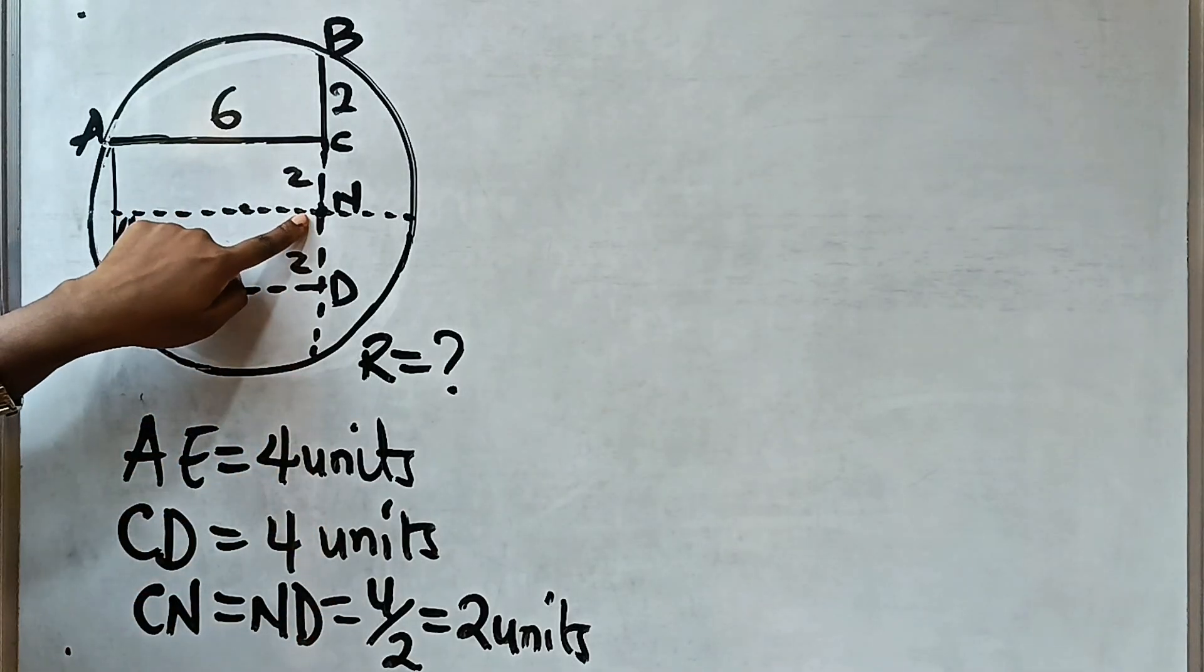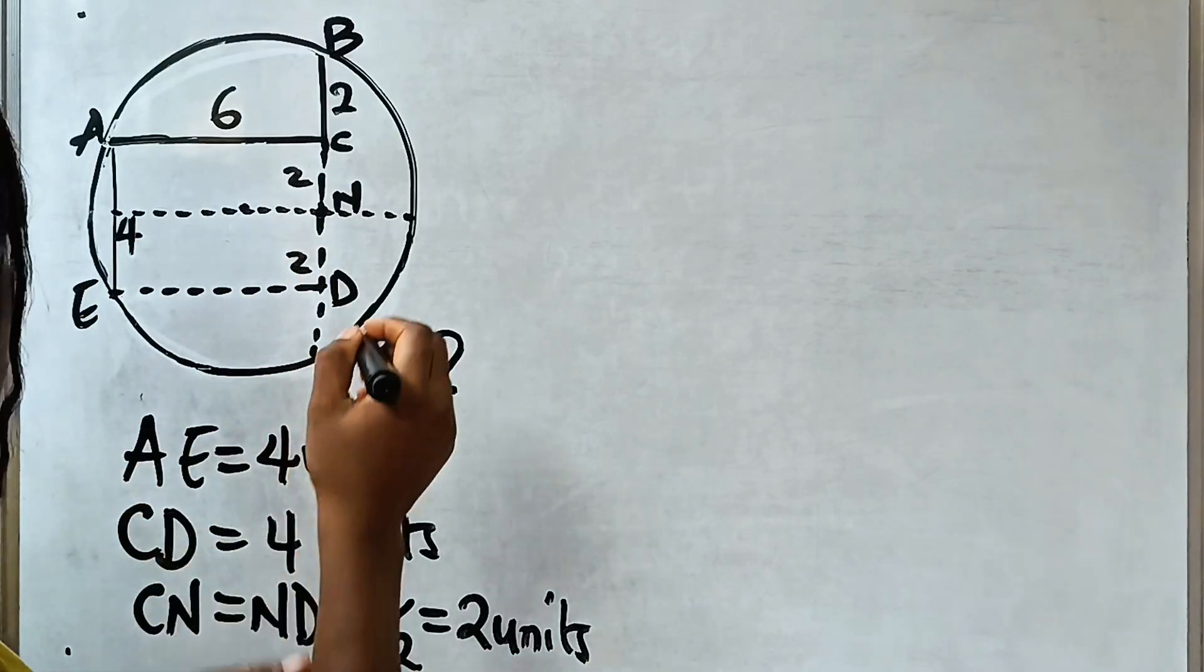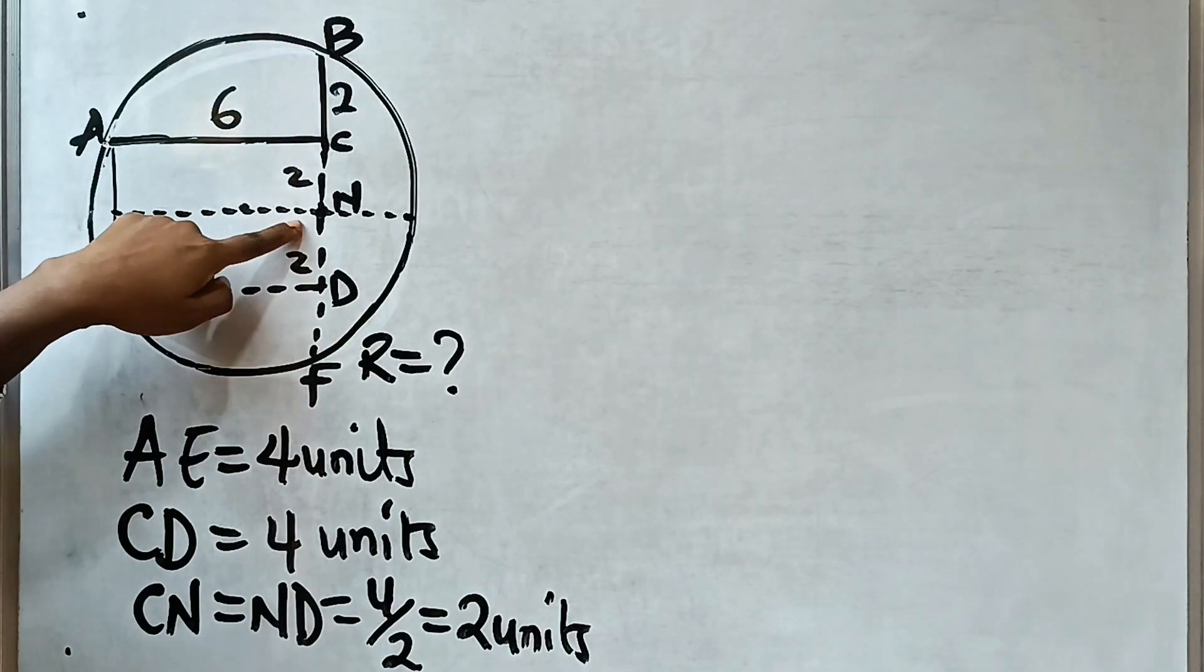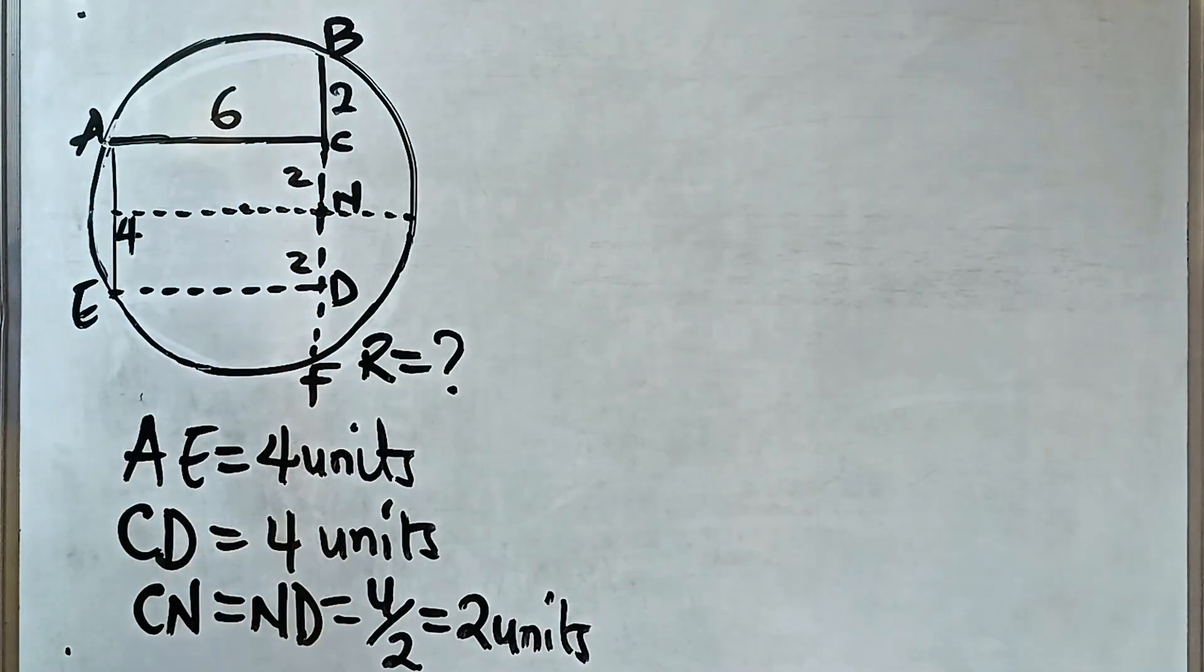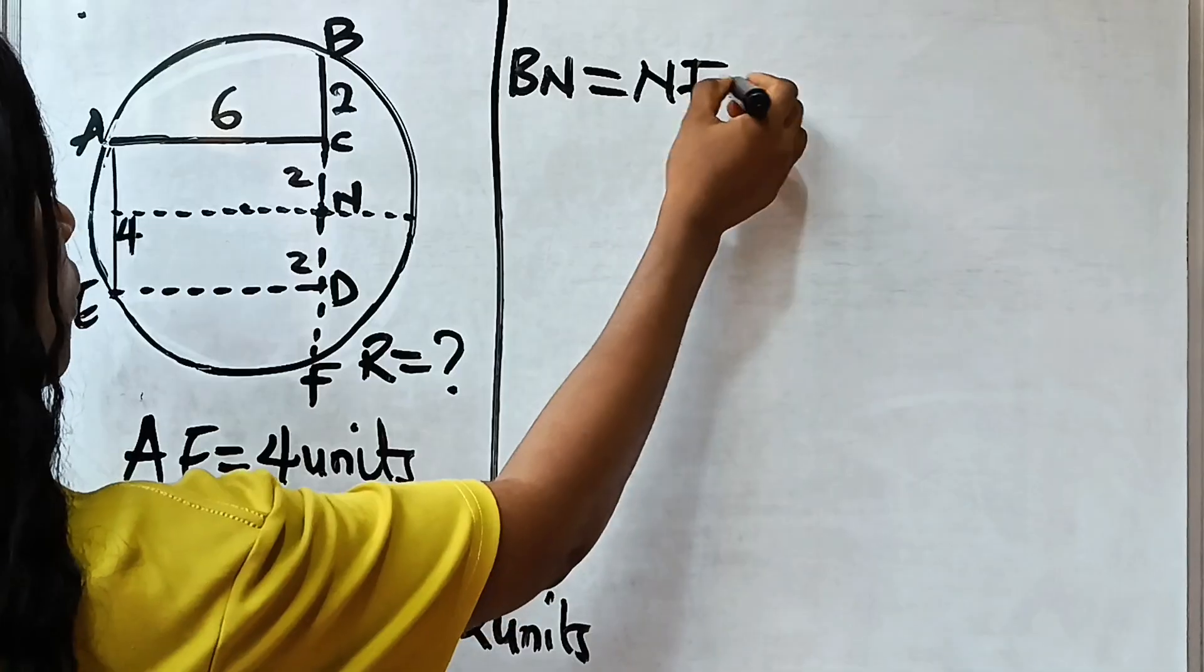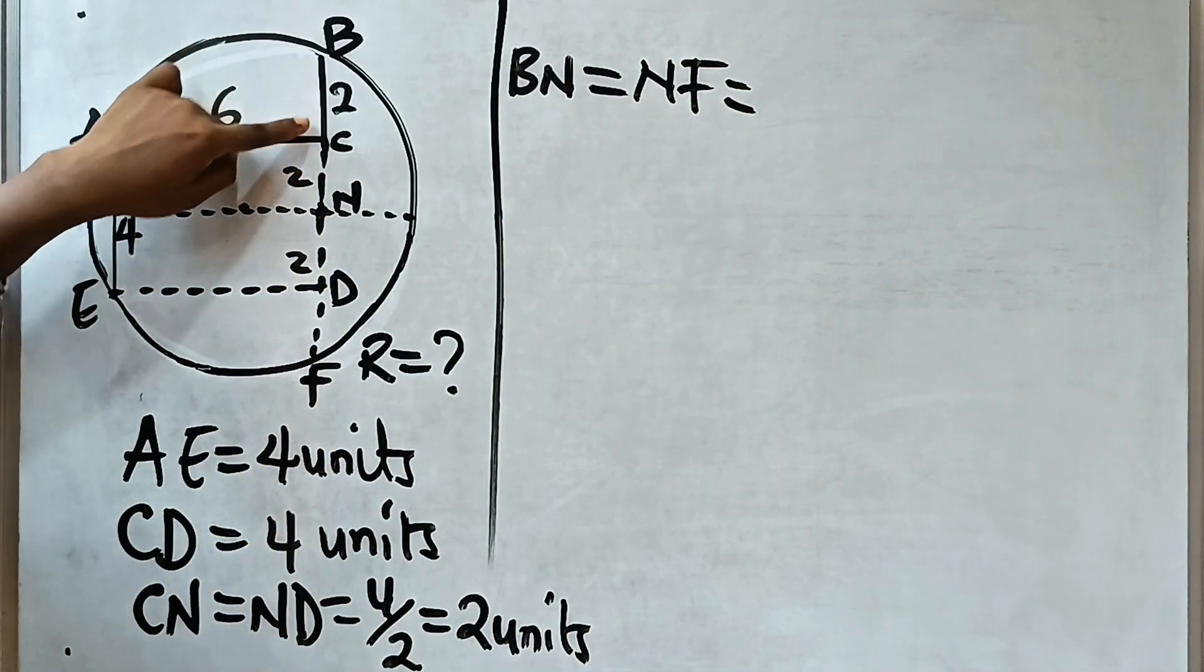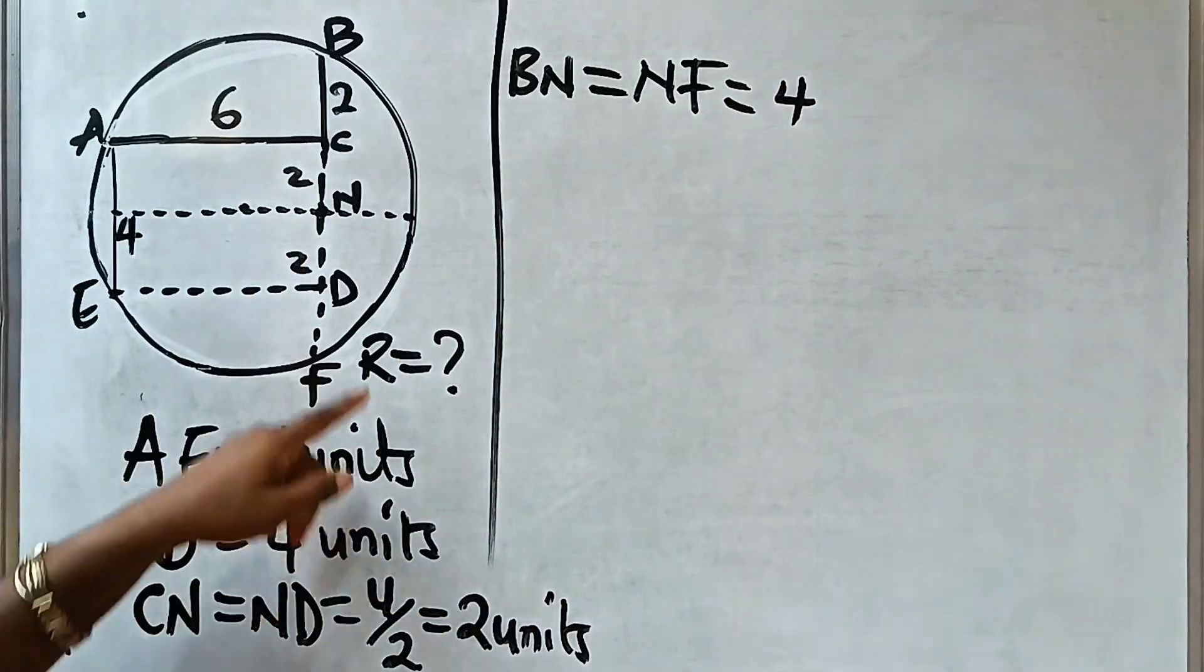Now, because this is the center of the circle, BN must be equal to N, let's call this place F. So BN must be equal to NF, which is equal to... BC is 2, 2 plus 2 is 4, so BN is 4, which is equal to 4.